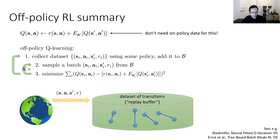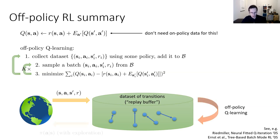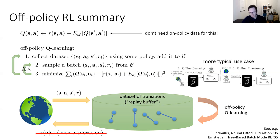This Bellman-based approach immediately suggests a recipe for off-policy Q-learning: collect a dataset using some policy, add it to a replay buffer, sample a batch, minimize the Bellman error on that batch, repeat. You can graphically represent collecting transitions (s, a, s', r), storing them in a buffer, running off-policy Q-learning, and occasionally collecting more data. In offline learning you omit the data collection step, and more typically you do offline learning followed by online fine-tuning.